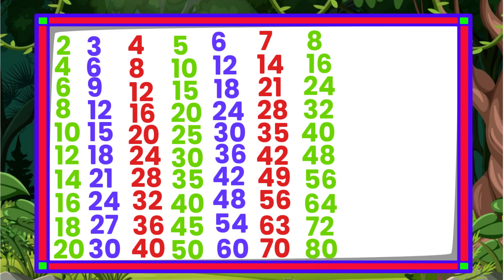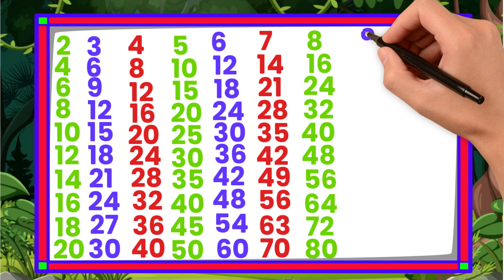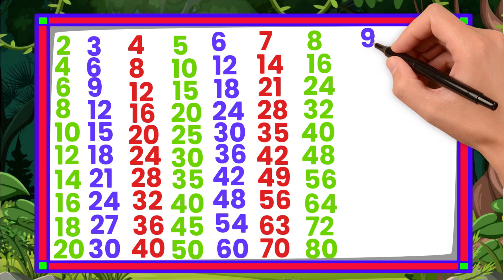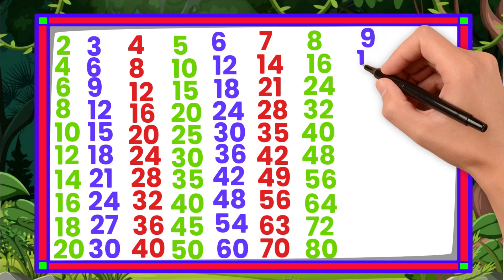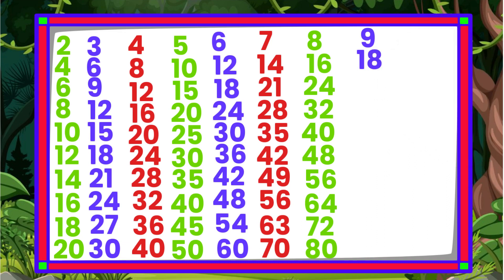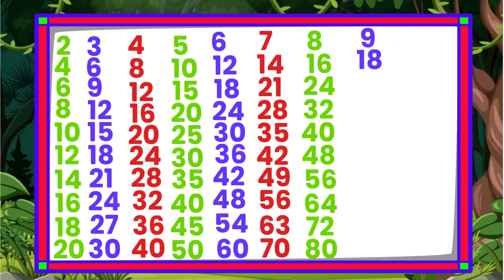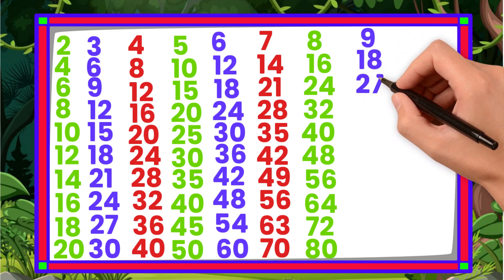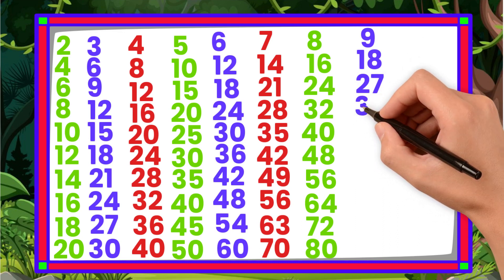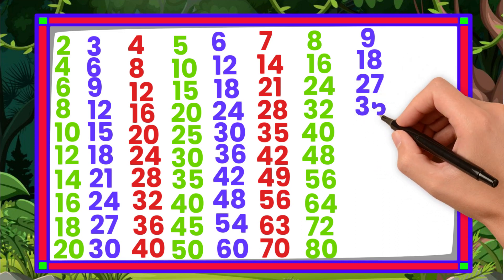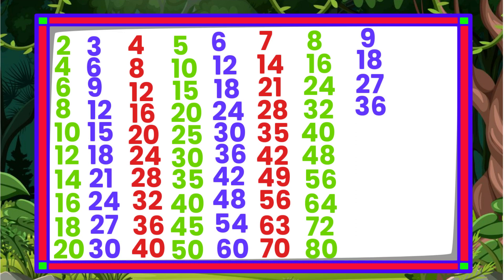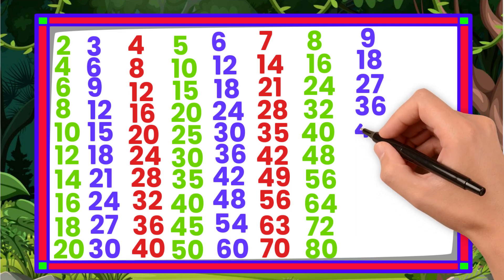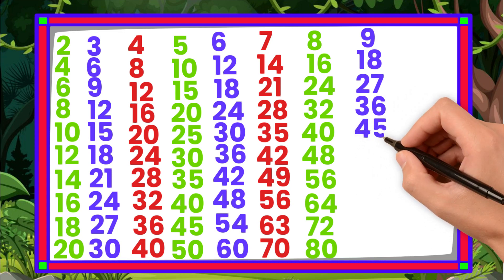9 1s are 9. 9 2s are 18. 9 3s are 27. 9 4s are 36. 9 5s are 45.